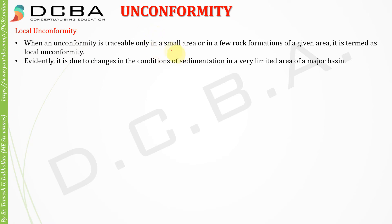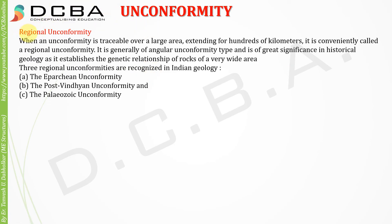When an unconformity is traceable only in a small area or in a few rock formations of a given area, it is termed a local unconformity. The word 'local' means it is not widespread but limited to a certain area. It is evidently due to changes in the conditions of sedimentation in a very limited part of a major basin.